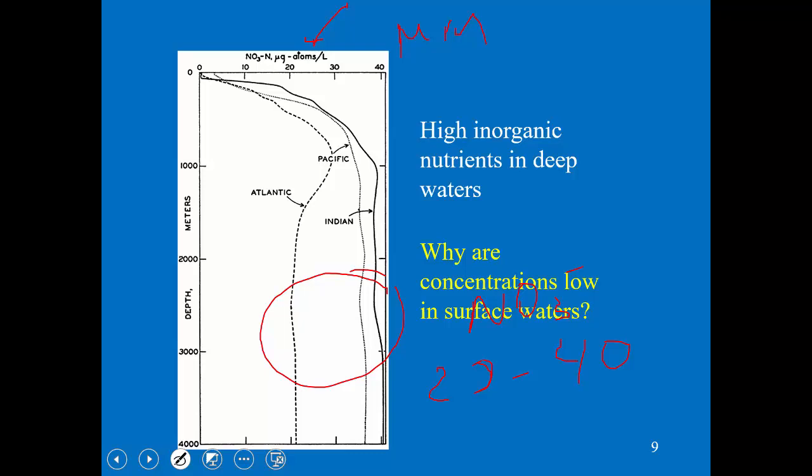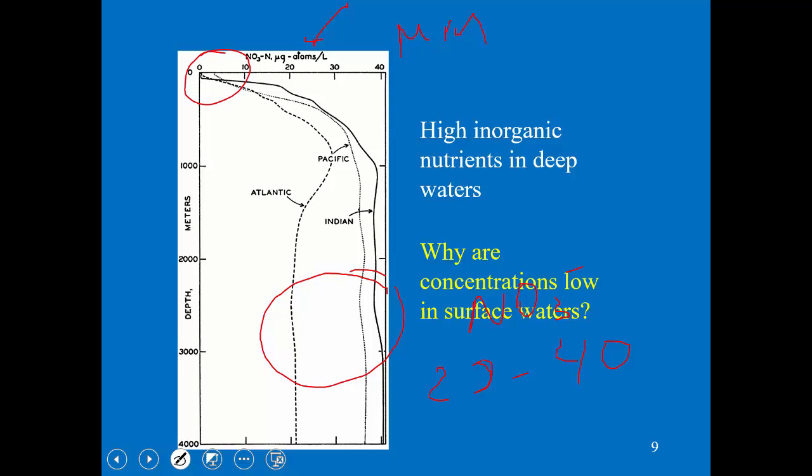Here's a question to see if you're awake: why are concentrations low in surface waters? Obviously it's because phytoplankton use those nutrients way up in the surface waters where they have plenty of light, and they use those nutrients to carry out primary production.